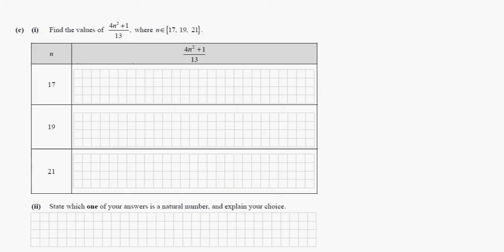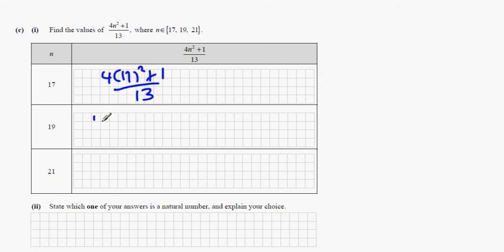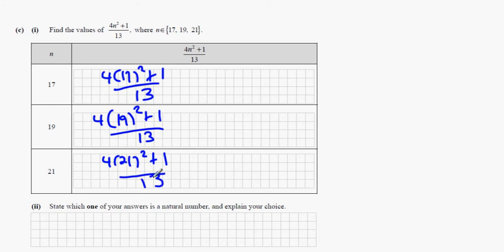Question C: find the values of (4n² + 1) / 13 where n equals 17, 19 and 21. So it's going to be 4 times 17 squared plus 1 over 13, then 4 times 19 squared plus 1 over 13, and 4 times 21 squared plus 1 over 13.